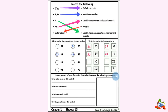Which number comes before 34? 33. So in this way we have to fill up what number comes before the given number. For this you must know the counting. The next question is the same — what comes before the given number.